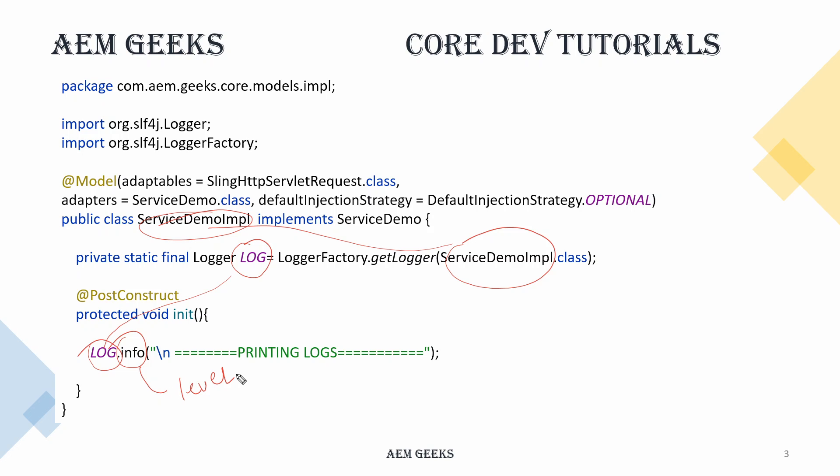You have different log levels like trace, debug, info, warning, and error — you can use any one to print logs in the log file, but you need to understand which one to use and when. When you write a log statement, it will print in a log file, but you need to understand in which file it will print. When you install AEM, it comes with default log files, and you can also create your own. When you create your project using Maven, Maven creates a specific log file for your project.